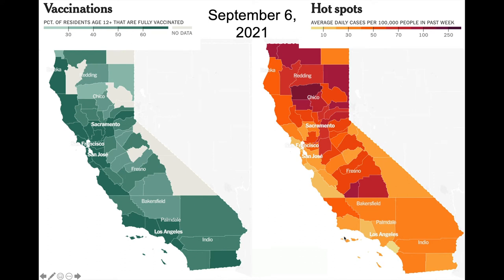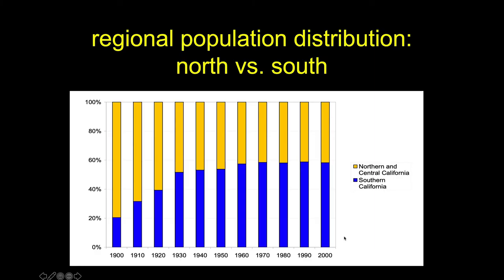Vaccination rates as of September 6, 2021, in the midst of the Delta surge, show that the darker counties — meaning more vaccinated — were mostly at the coast. Looking at risk levels, they were highest overall inland in California in terms of case rates as of September 6, 2021. This coastal versus inland divide shows up however we slice the data.